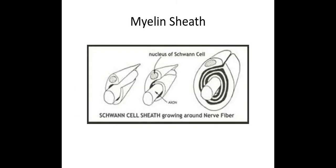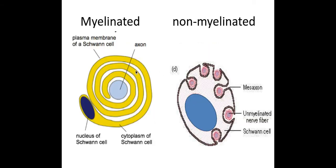Myelination is where a Schwann cell is wrapped around the axon. Because it is a cell, you'll find a nucleus and possibly other cell components within it. The whole idea is that it acts as an insulating barrier and therefore speeds up the rate of conduction of the nerve impulse. In a myelinated axon, the Schwann cell is wrapped around the axon creating insulating layers. In a non-myelinated axon, there is still a Schwann cell, but several axons pass through a single Schwann cell — it does not have the build-up of insulating layers creating that insulating barrier.